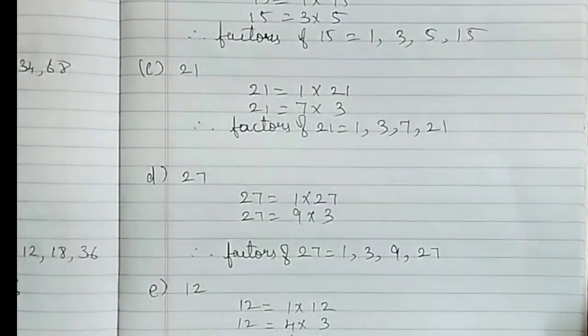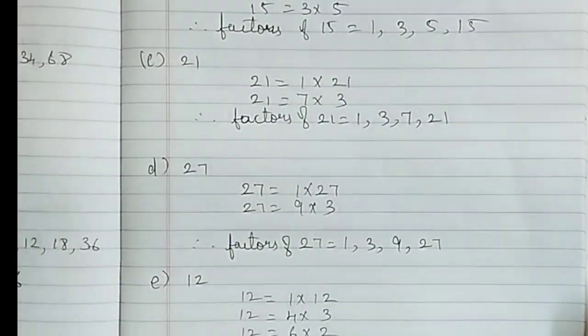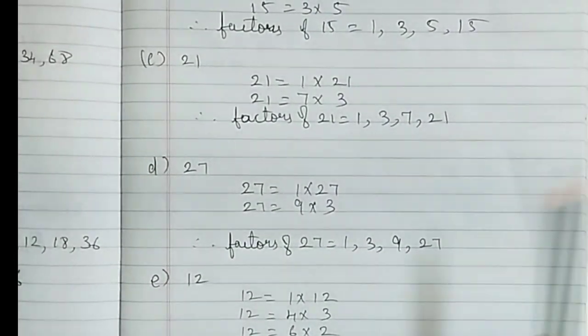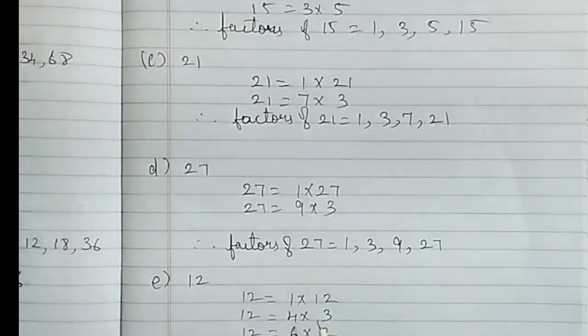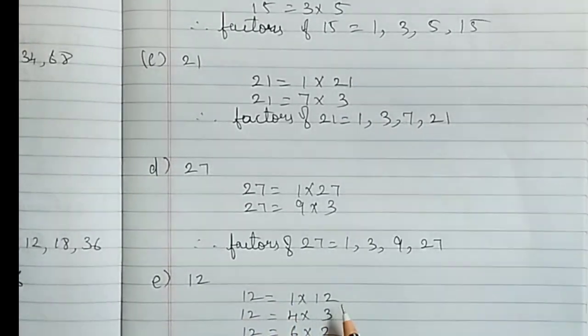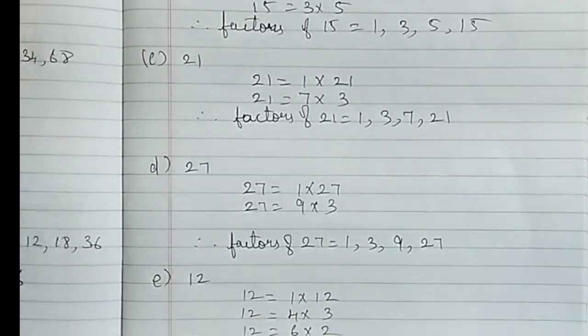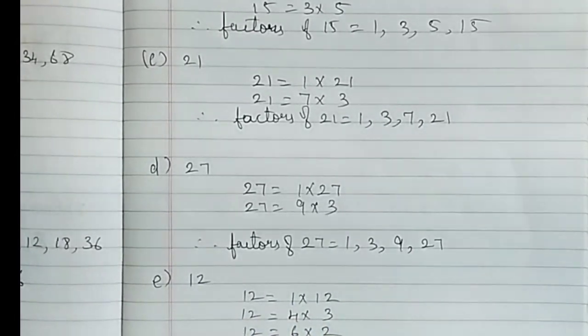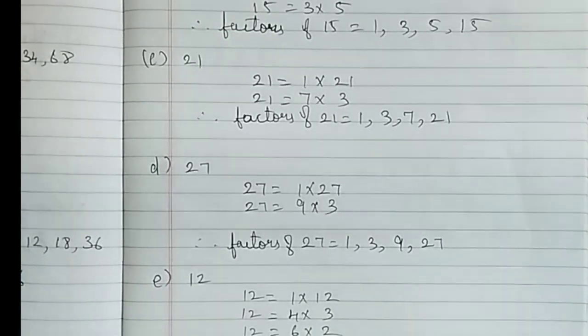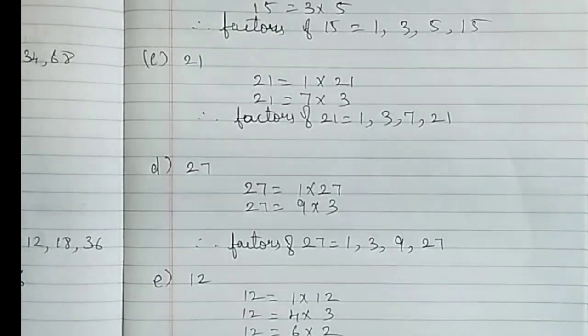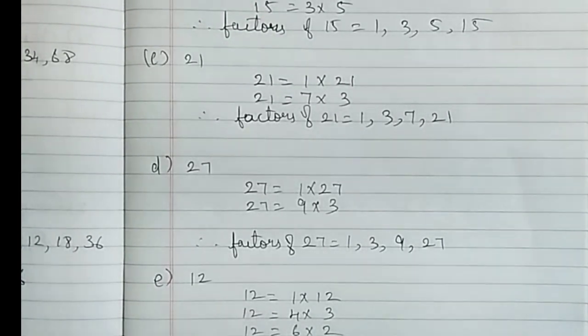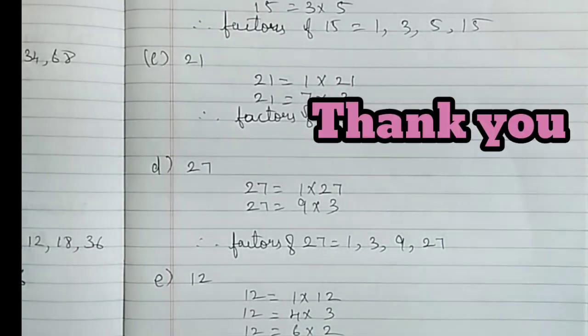(e) 12: 1 × 12 = 12, 4 × 3 = 12, 6 × 2 = 12. Therefore, the factors of 12 are 1, 2, 3, 4, 6, and 12.